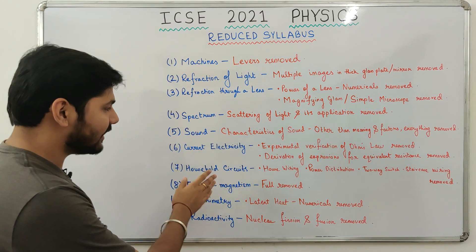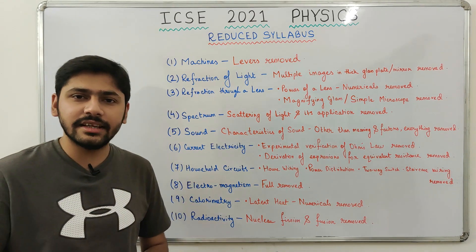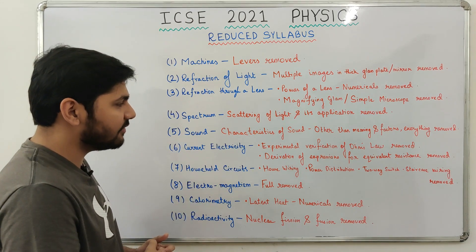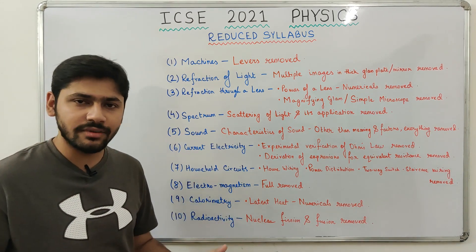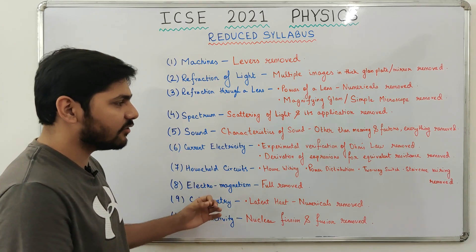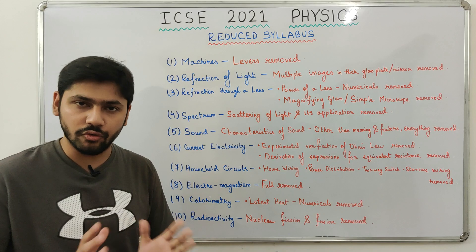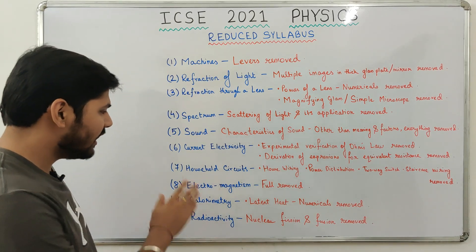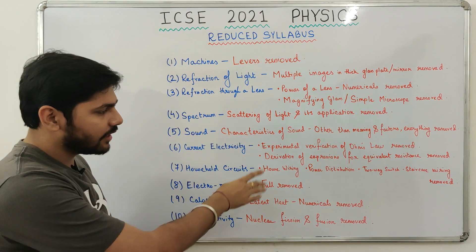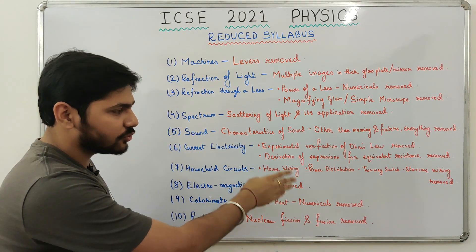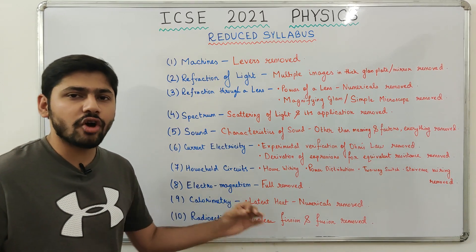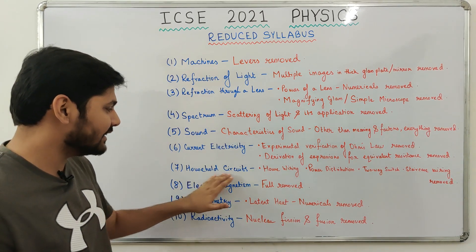Next comes current electricity. Two topics have been removed: the experimental verification of Ohm's law, and the derivation of expressions for equivalent resistance. Next, from household circuits, four topics have been removed: house wiring, power distribution, two-way switch, and staircase wiring.